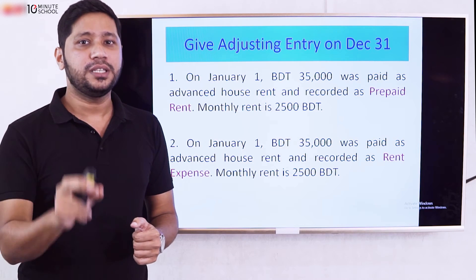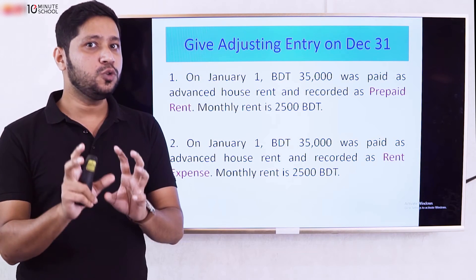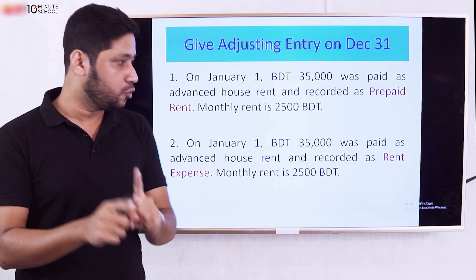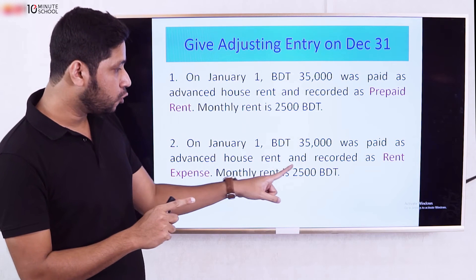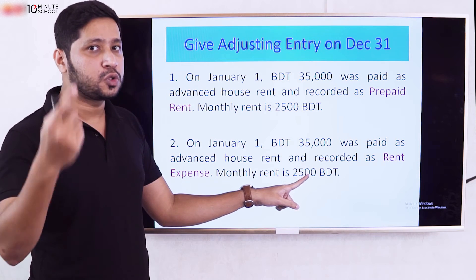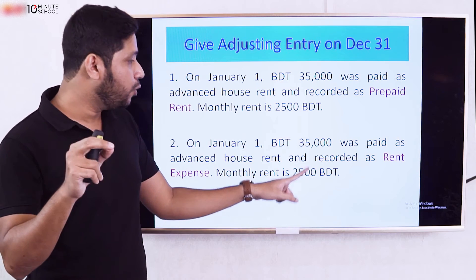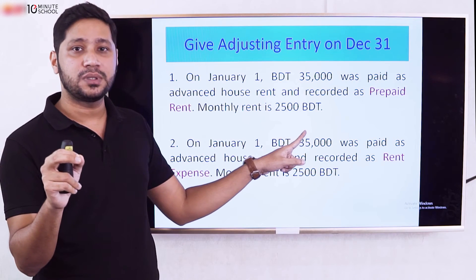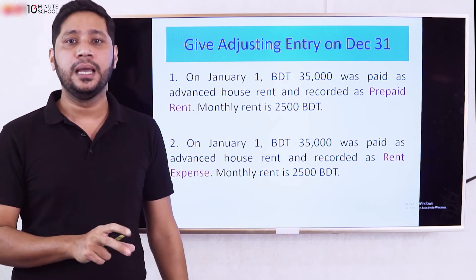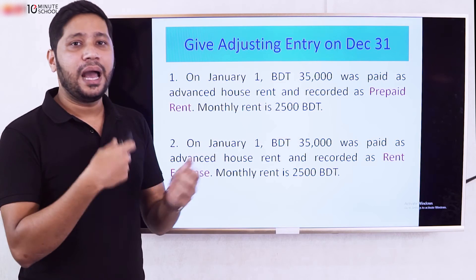If the initial journal entry was Prepaid Rent debit, Rent Expense credit, then in the adjusting entry the unused amount is what matters. Since $35,000 was paid, the used and unused portions must be separated correctly when making the adjustment.